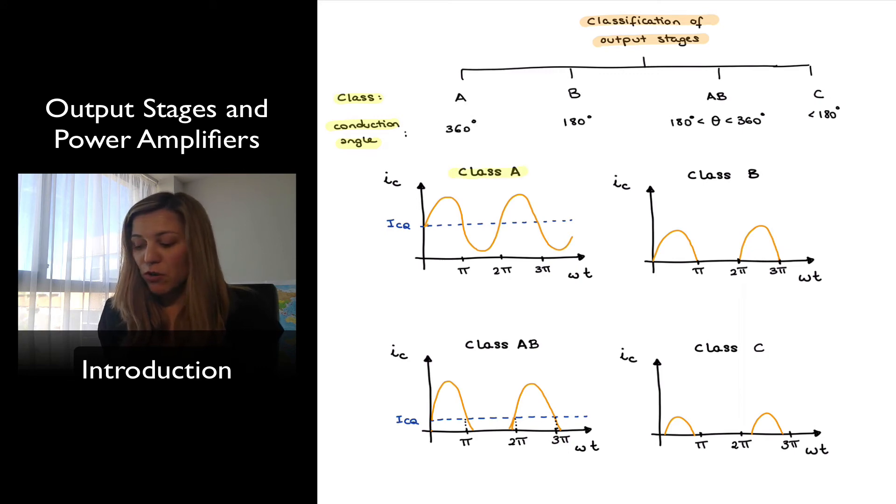It's represented there in the first graph and we can see the representation of the collector current in the output transistor IC versus omega t which is just the angle so as the signal moves as we go through different periods we will see that the transistor is always conducting meaning the collector current always has a non-zero value.